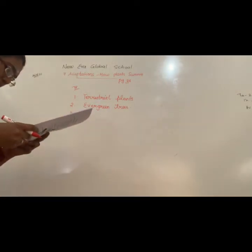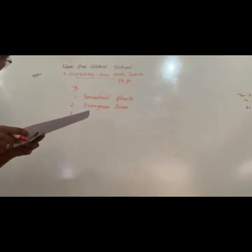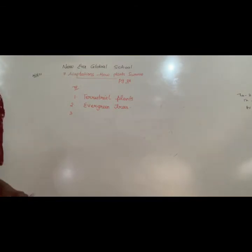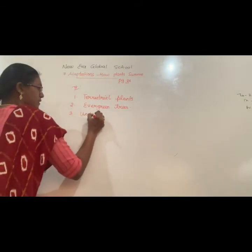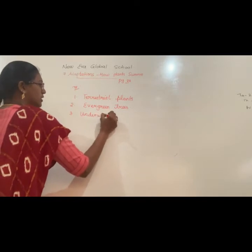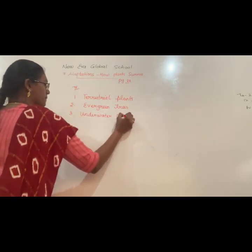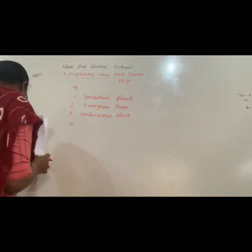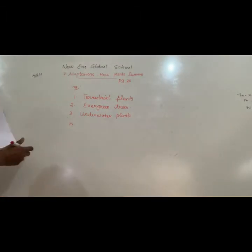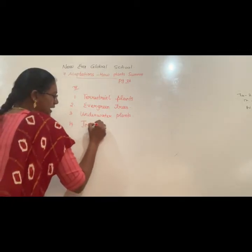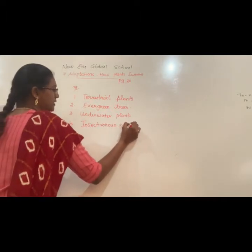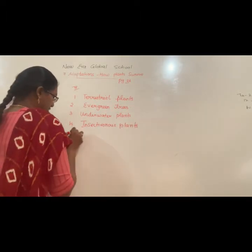Third one: plants that grow under the water surface — they are called underwater plants. Fourth one: plants that trap insects inside them — they are called insectivorous plants.